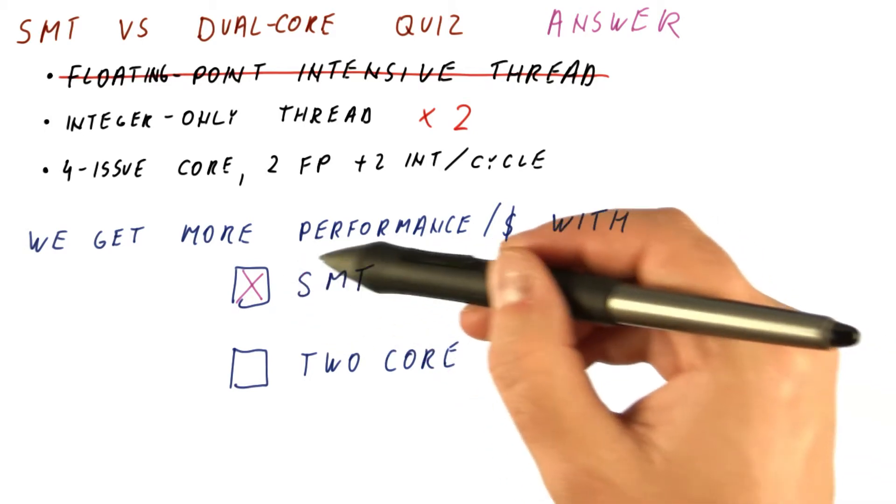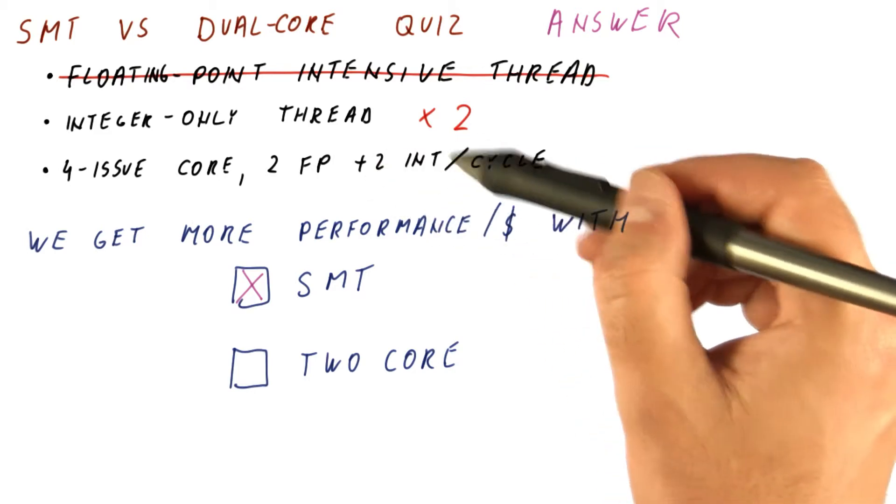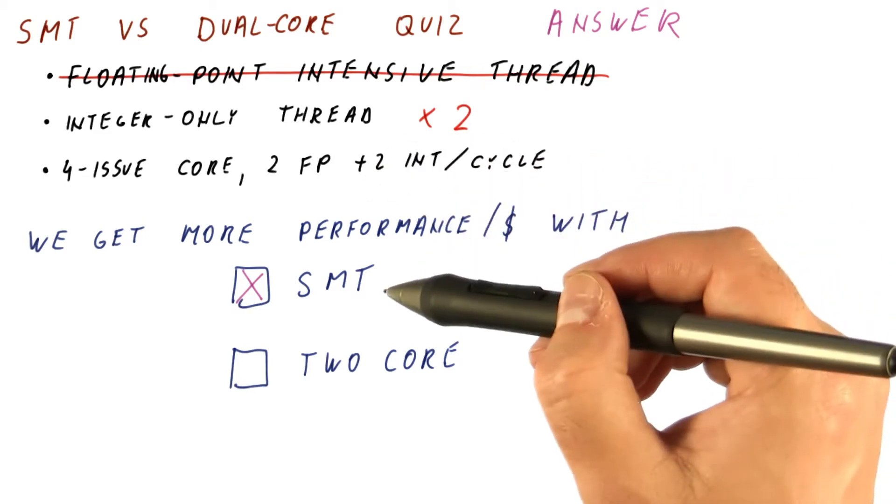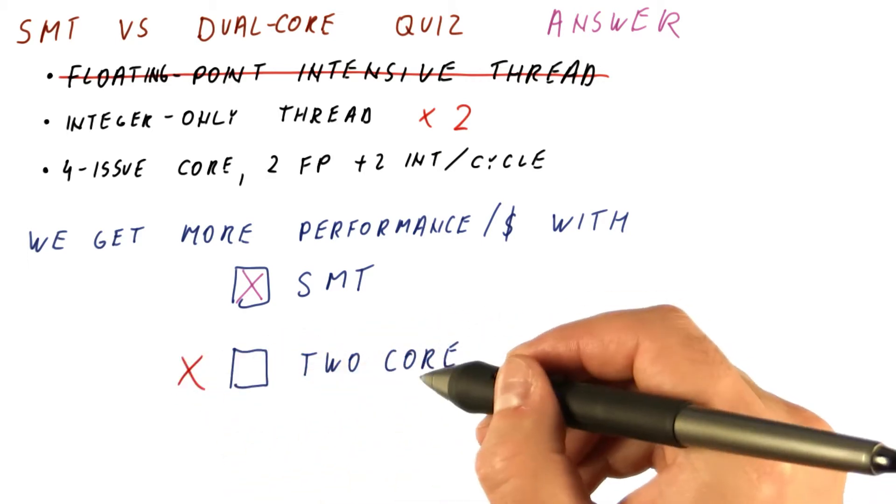Whereas this gets us the performance of a single core because both threads are sharing the two issue slots for a cost that is more than one core. So in that case, this would be the more cost effective option.